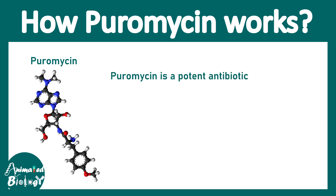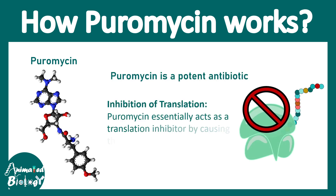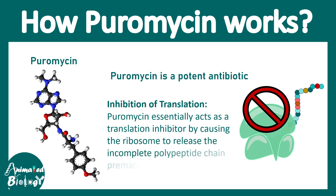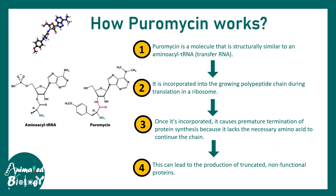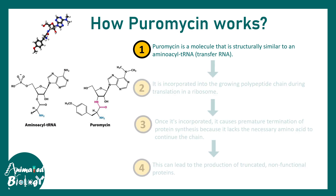Puromycin is a potent antibiotic that inhibits translation. The way it inhibits translation is by allowing the peptide-bound puromycin to detach from the ribosome, which leads to truncated protein formation.